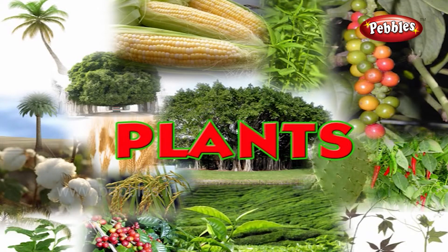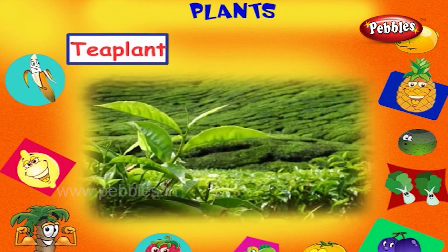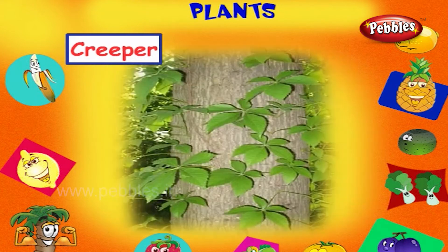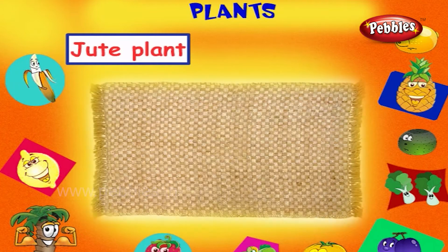Plants, children! Come on, let us know some plants. This is a tea plant, it gives us tea leaves. This is a creeper, it creeps on a support. This is the jute plant, it gives fiber to make sacks.